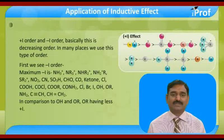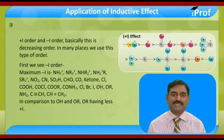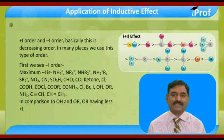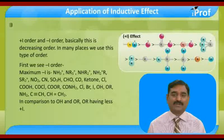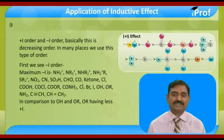First we see minus-I order. The maximum minus-I is NF3 positive, then NR3 positive, then NHR2 positive, then NS2R, then SR2 positive, then NS3 positive, then NO2, then CN, then SO3H, then CHO, then CO ketone — aldehyde then ketone.